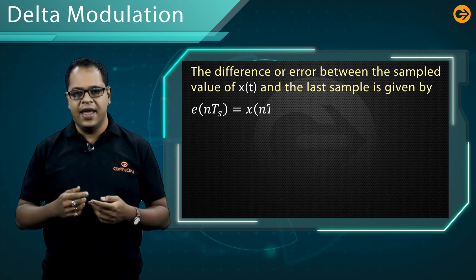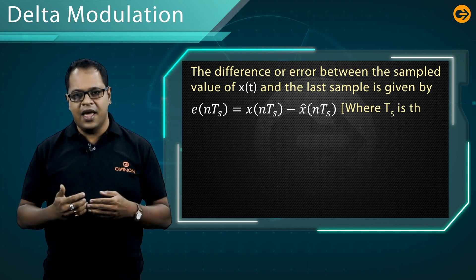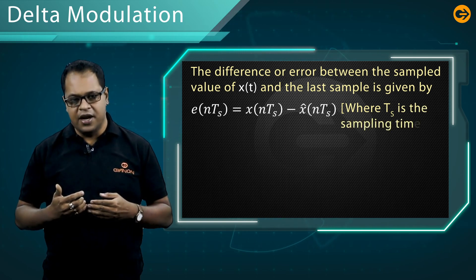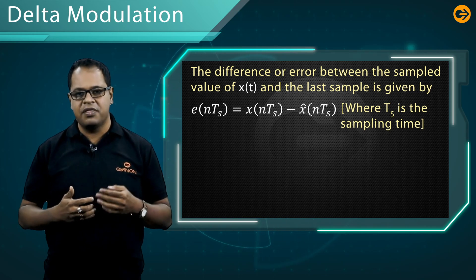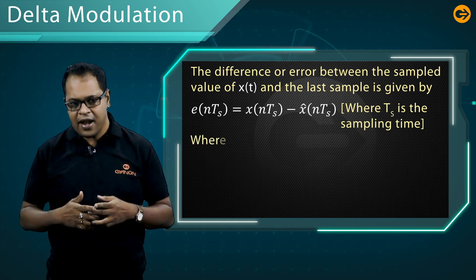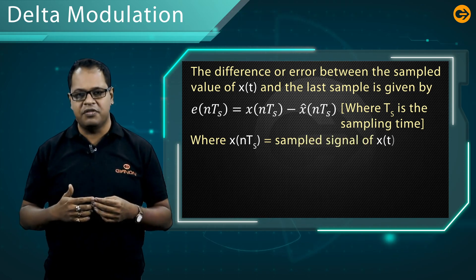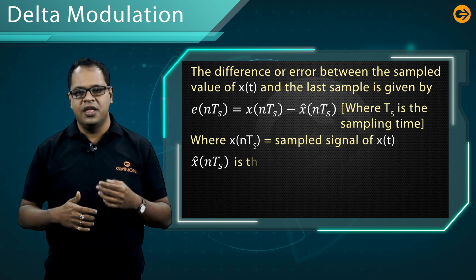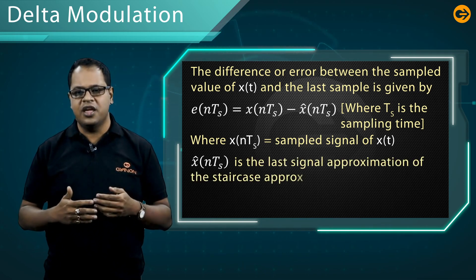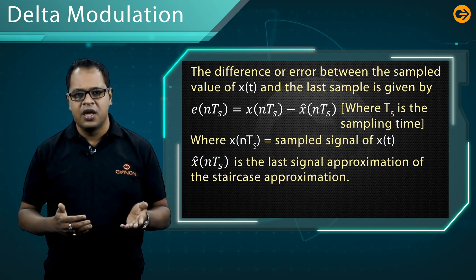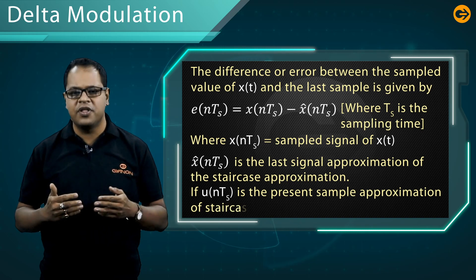The difference or error between the sampled value of x(t) and the last sample is given by e(nTs), where n is a sample and Ts is the sampling period. It is equal to x(nTs) minus x̂(nTs), where x(nTs) is the sampled signal and x̂(nTs) is the last approximation of the sample.